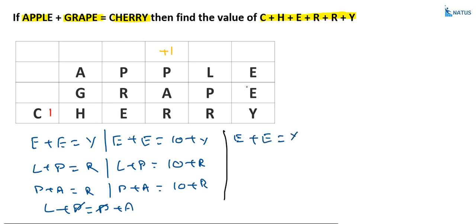What are the possible values of E? Zero is not possible because 0 plus 0 equals 0. One is not possible because one is already allocated to C. Five is also not possible. So E can be 4, 3, or 2. Suppose E is equal to 4 — then substituting: 4 plus 4 equals 8. So if E equals 4, the value of Y is equal to 8.